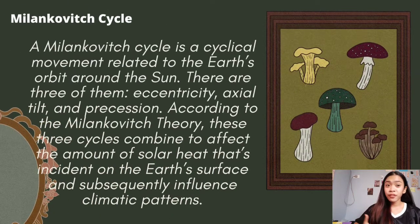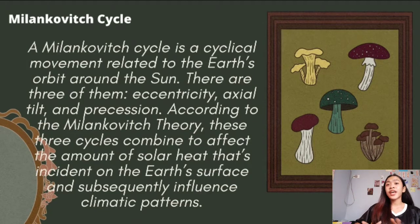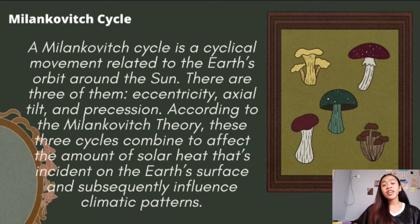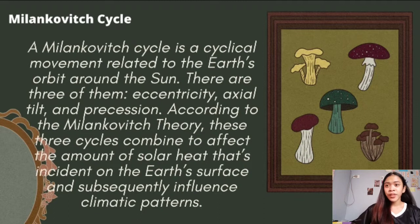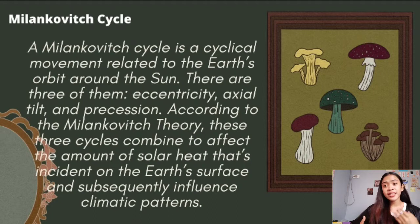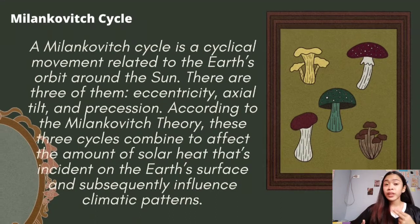A Milankovitch cycle is a cyclical movement related to the Earth's orbit around the Sun. There are three of them: eccentricity, axial tilt, and precession. According to the Milankovitch theory, these three cycles combine to affect the amount of solar heat that is incident on the Earth's surface and subsequently influence climate patterns.